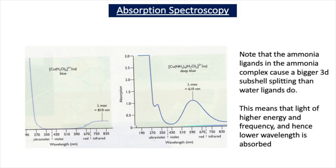The ammonia ligands in the ammonia complex Cu(NH₃)₄(H₂O)₂²⁺ cause a bigger 3D splitting. This means that light of higher energy and frequency and lower wavelength is absorbed. So we have to remember that when we swap ligands in a complex, we are changing the D-D level splitting energy and therefore the frequency and energy of light being absorbed, and therefore the colour of the complex.